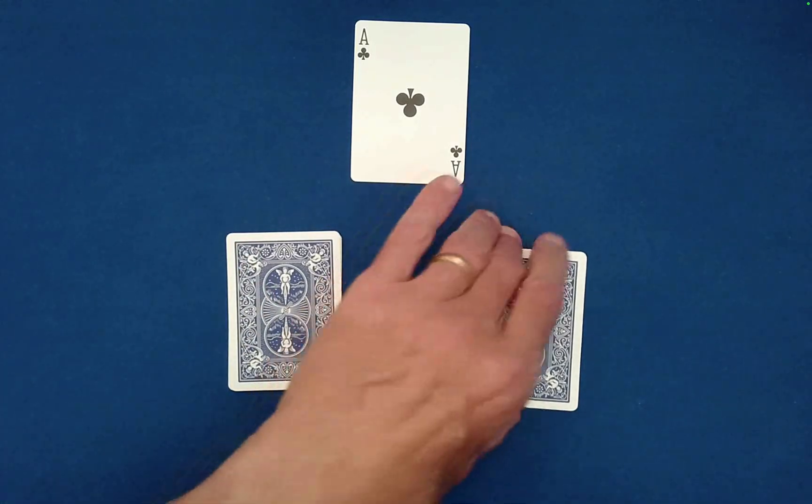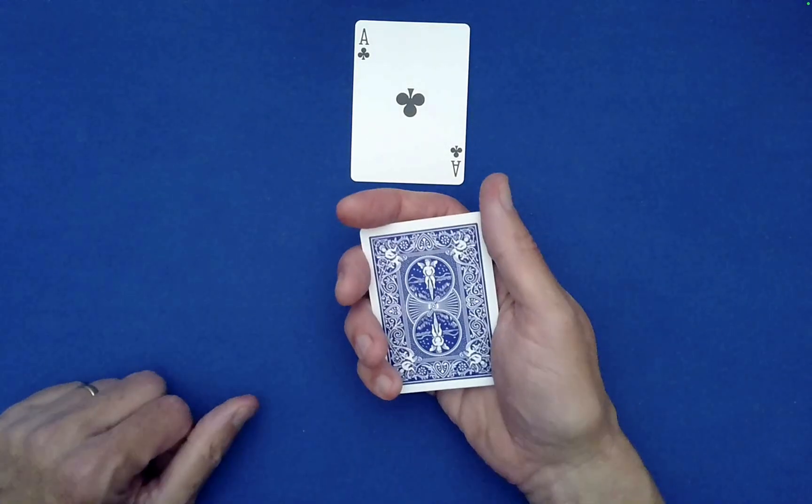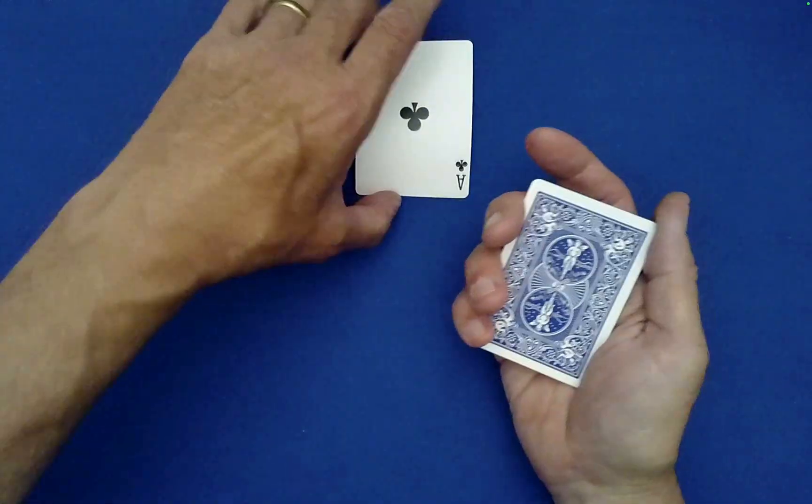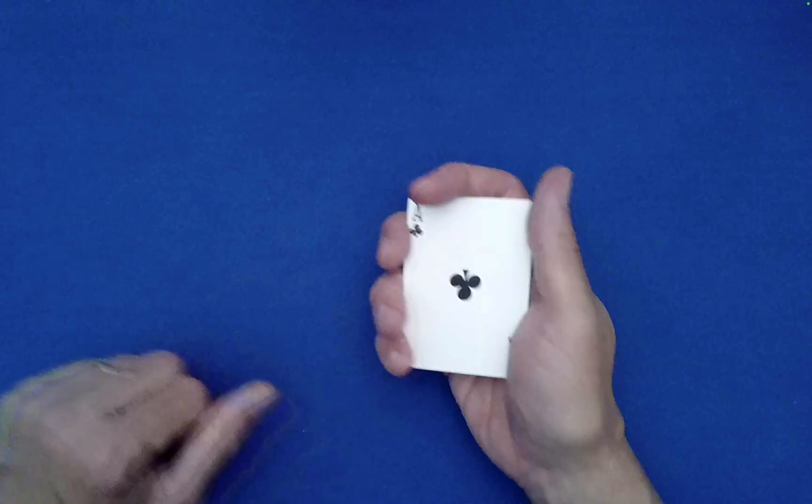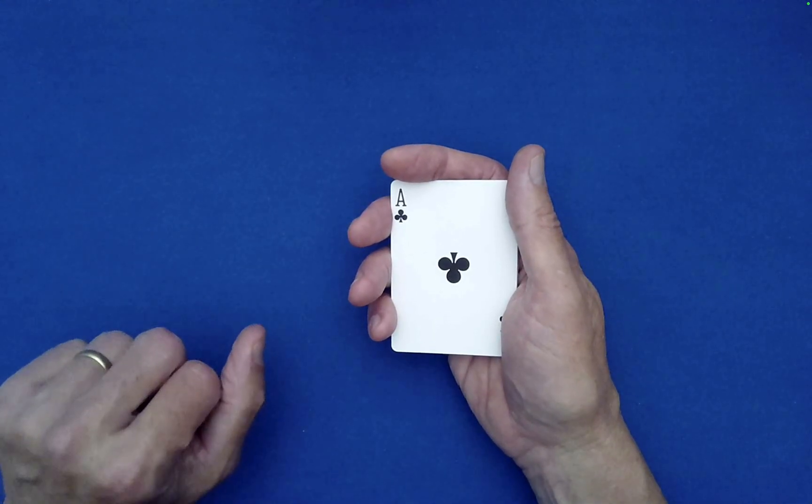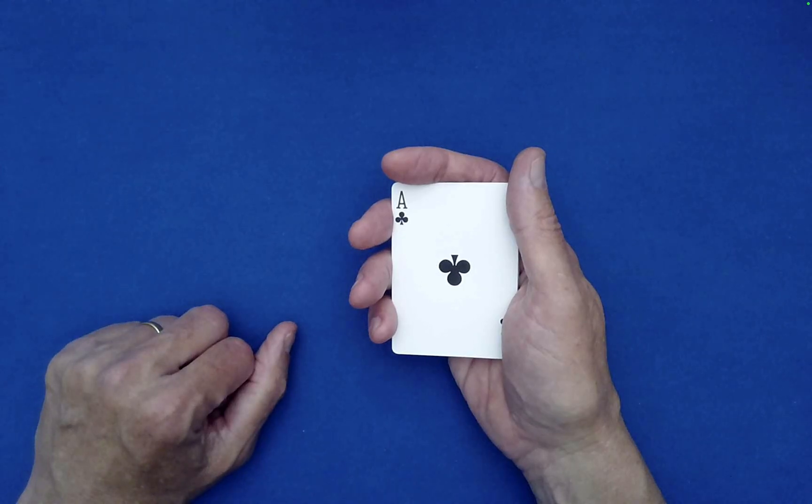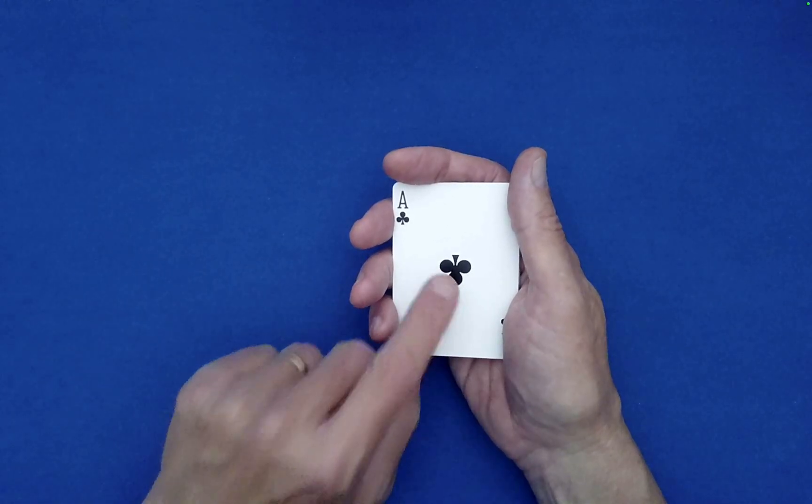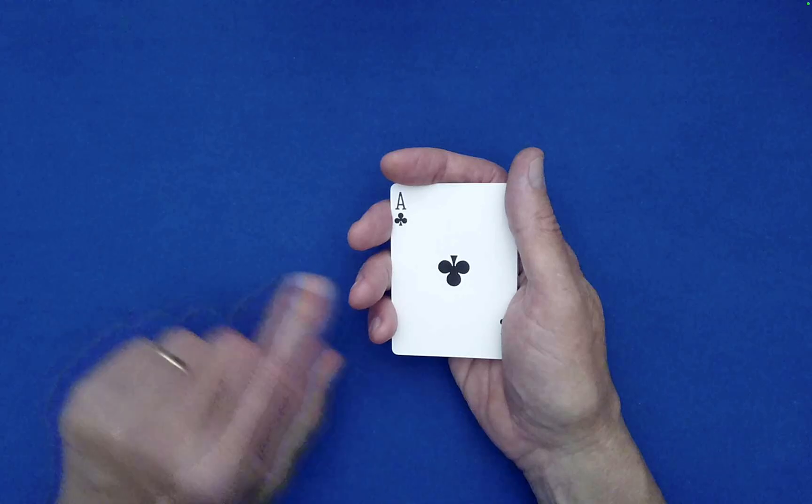And now they bury it under the other packet of three cards, and then from here we just set the ace of clubs on top. Now at this point you have a choice as the performer - you can have the ace of clubs face up like I've set here or you could have it face down.